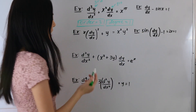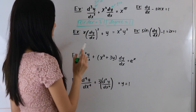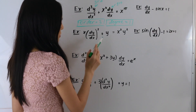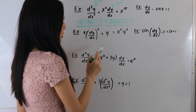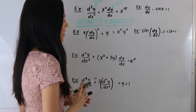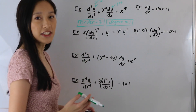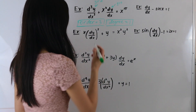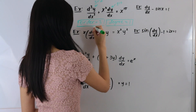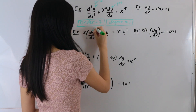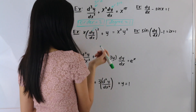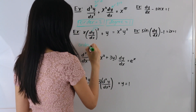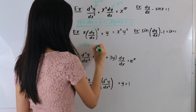In this next example, we have x times dy over dx squared plus y, equal to x squared times y squared. Let's label the order of our derivative. This is first order, and since that is the highest order derivative, our order is equal to 1.